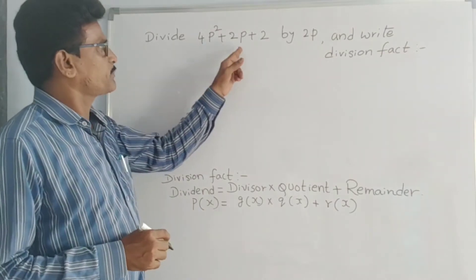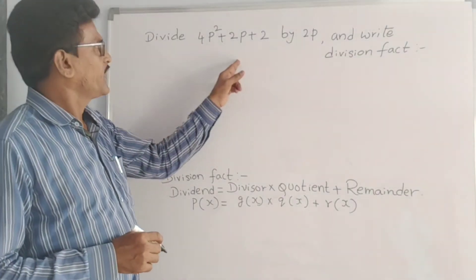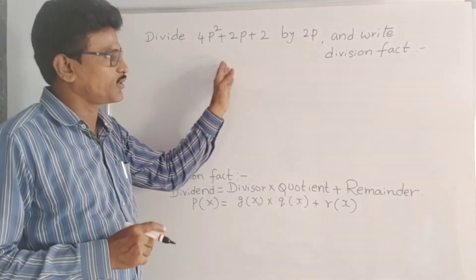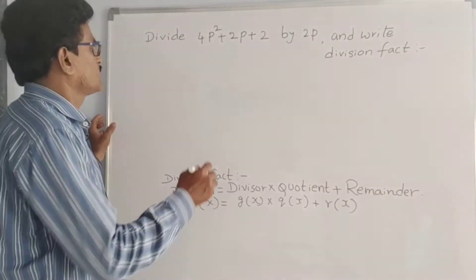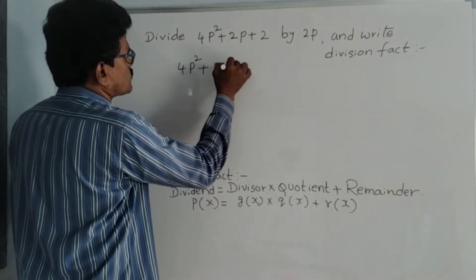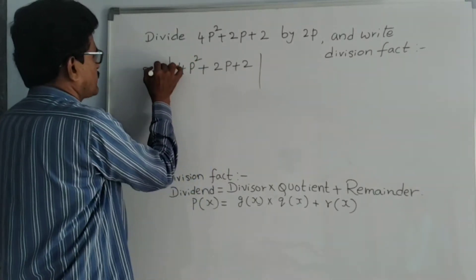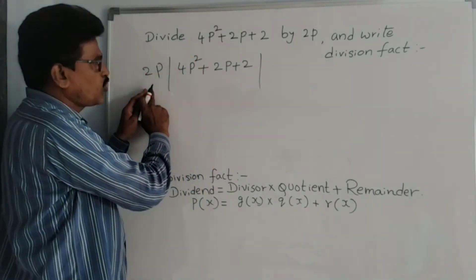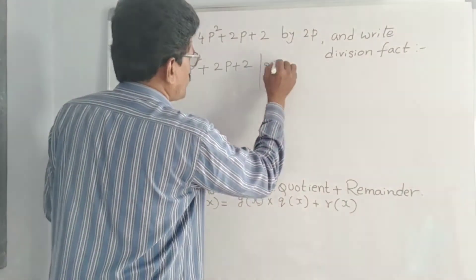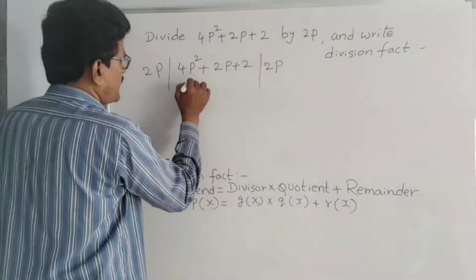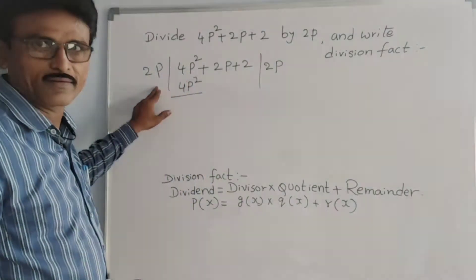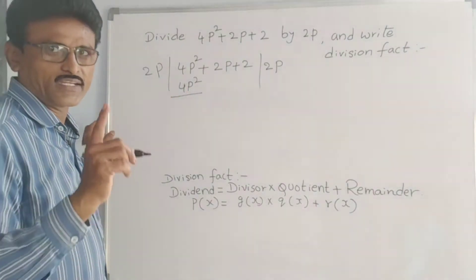See friends. 4P squared plus 2P plus 2 is a quadratic polynomial. We divide this quadratic, that is second degree polynomial, with linear polynomial 2P. So 4P squared plus 2P plus 2, divide this by 2P. First, 4P squared is there. 4P squared divided by 2P: the first term divided by 2P gives 2P. Now do subtraction here. 4P squared cancel. Bring down 2P.